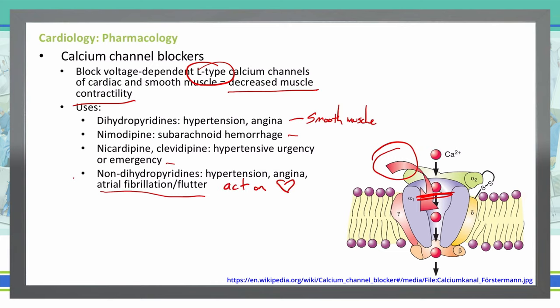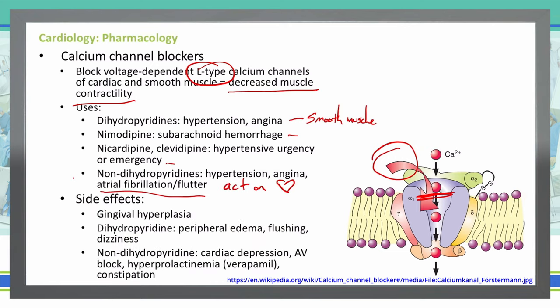Some adverse effects associated with calcium channel blockers include gingival hyperplasia, which is an overgrowth of the gingiva in your mouth. Dihydropyridine blockers can cause peripheral edema, flushing, and dizziness.